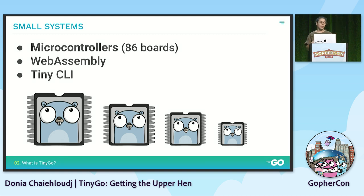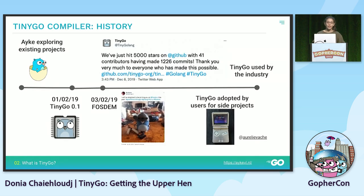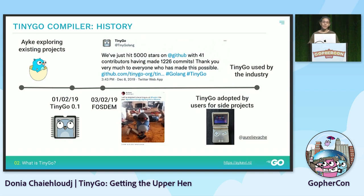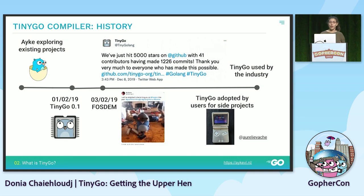You can also use TinyGo for a tiny command-line interface with a binary that is not so huge. Let me share a bit of history about TinyGo. At the beginning, Ake, the inventor of TinyGo, explored existing projects because he wanted to make some LEDs blink very fast. He explored Python and MicroPython, but it was not satisfying for him. So he decided to write a new compiler.